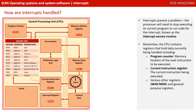Remember, the CPU contains registers that hold data currently being handled, including the program counter — the memory location of the next instruction — the current instruction register — the actual instruction that's currently being carried out — and various other registers like the MAR and MDR.